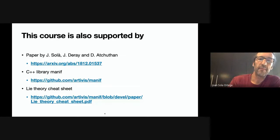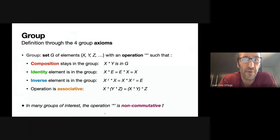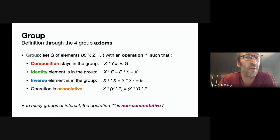So let's start. What is a group? A group is a set of elements with an operation. And this set with this operation, to be a group, it has to fulfill four axioms. So if you take two elements of the group, x and y, and you operate them together, the result is a member of the group also.